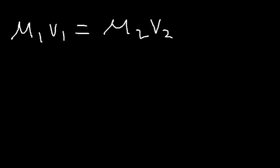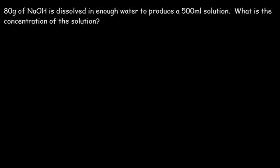The dilution equation M1V1 = M2V2 works because the moles of solute before you add water equals the moles after. The amount of solute remains the same — only the volume of solution changes. For example, when you dissolve salt in water, the salt is the solute, water is the solvent, and together they make the solution.